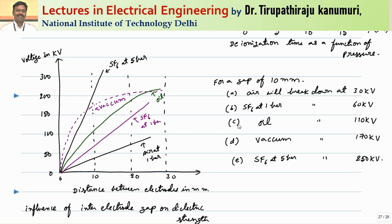Now let us see how by changing the distance between electrodes the dielectric strength changes, and how much gap is required to achieve the required dielectric strength or to break a given voltage. If air is kept at one bar of pressure — normal conditions — as the electrode distance increases linearly, the dielectric strength increases. For example, for an air gap of 10 mm, air will break at a voltage of 30 kV under normal conditions.